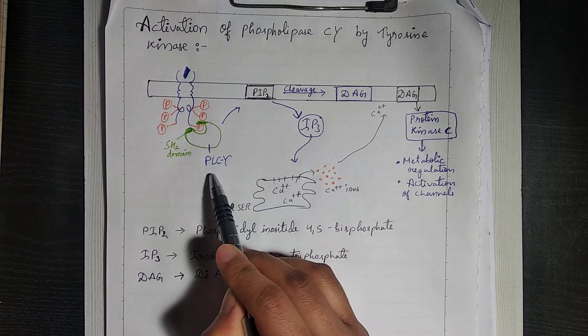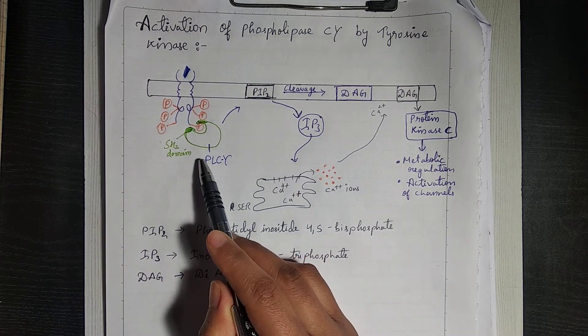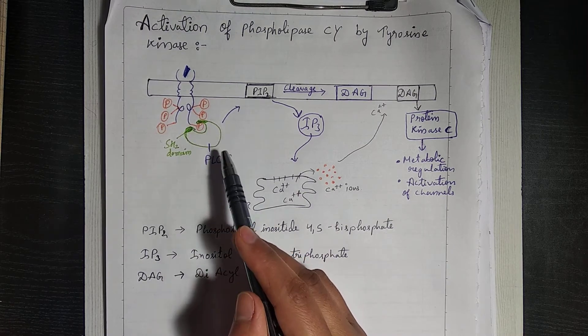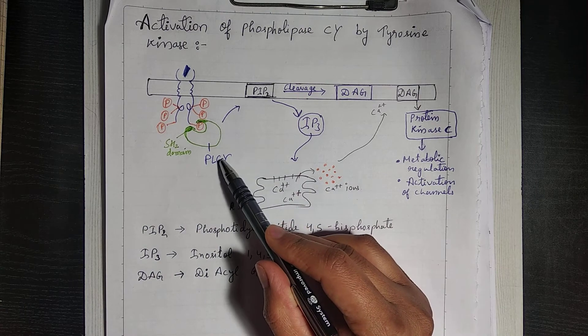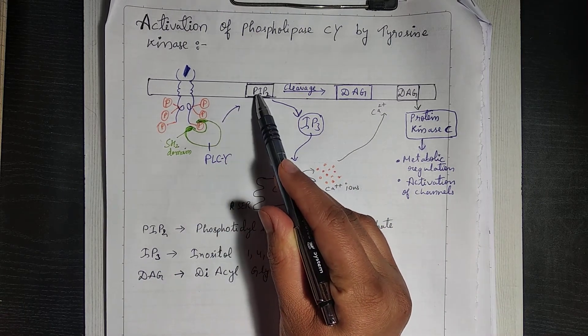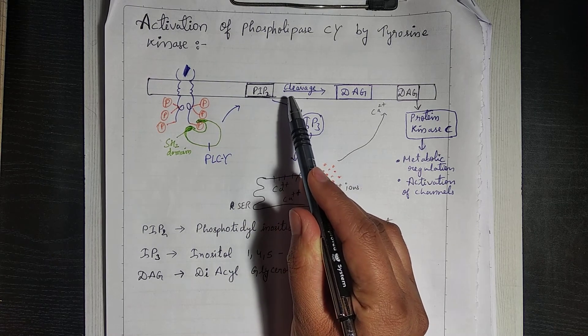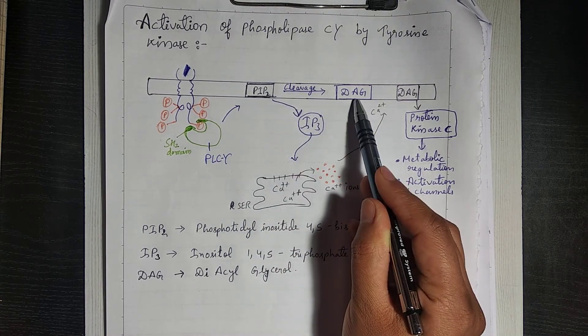And it will activate PIP2, and PIP2 which we know is cleaved and divided into two parts: that is DAG which is always bound to the membrane and IP3.